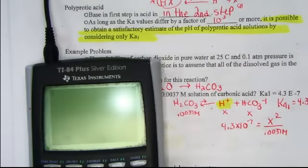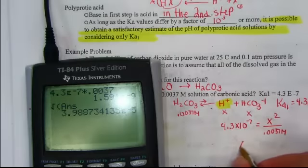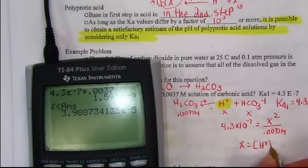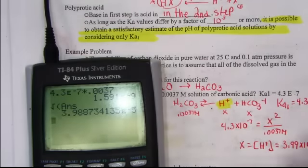We're going to cross multiply Ka1, so 4.3 E negative 7 times 0.0037, and the value on my calculator screen represents what we call X squared. So I'll square root my answer, and X which we let represent hydrogen ion is 3.99 times 10 to the negative 5th molar units.